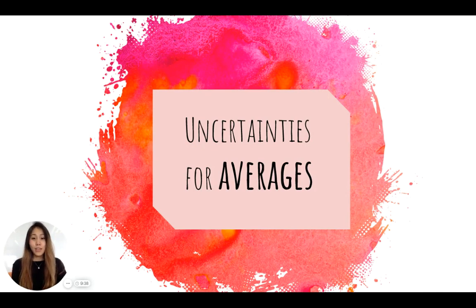So we've taken a look at random, systematic, accuracy, precision, as well as the conversions between absolute and relative uncertainties. Another uncertainty that we could calculate is for averages.